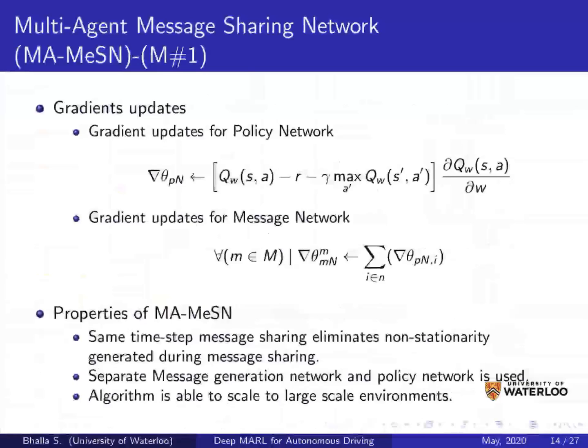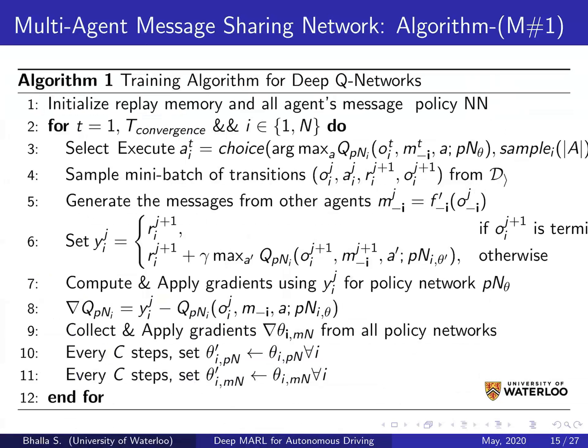Looking at the algorithm for MAMSN: on line four, we sample a mini-batch of transitions to achieve off-policy training, as opposed to Dial which requires on-policy training. Lines six through eight generate the gradients for the policy network, then compute the cumulative gradients for the message network using all policy network gradients, and apply the gradients to these neural networks.